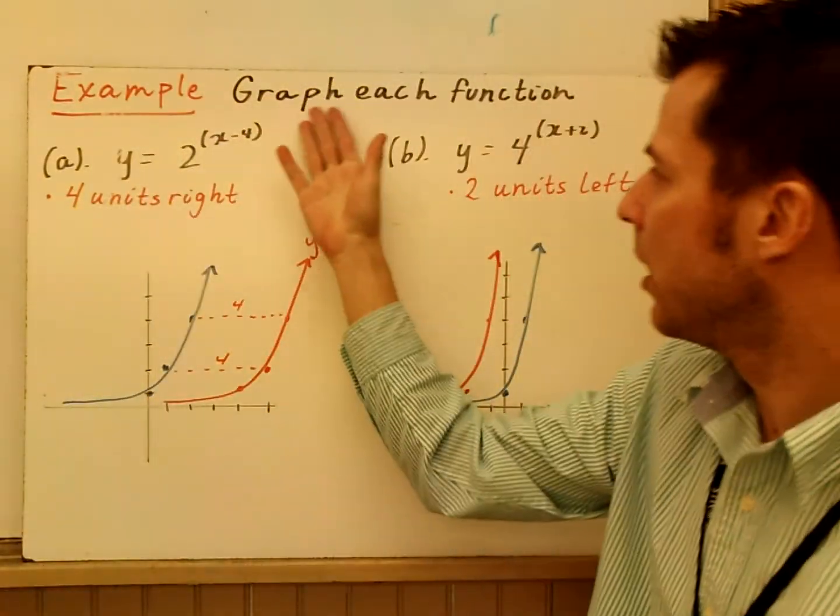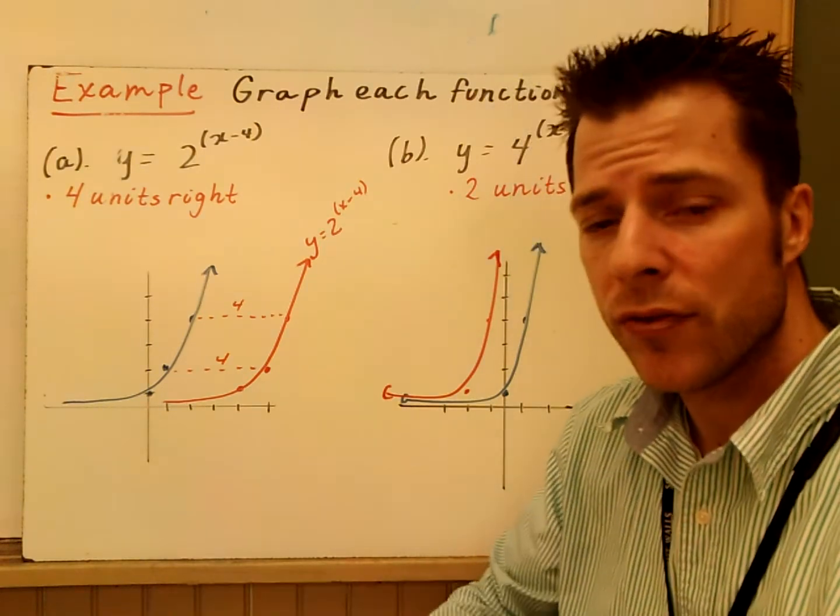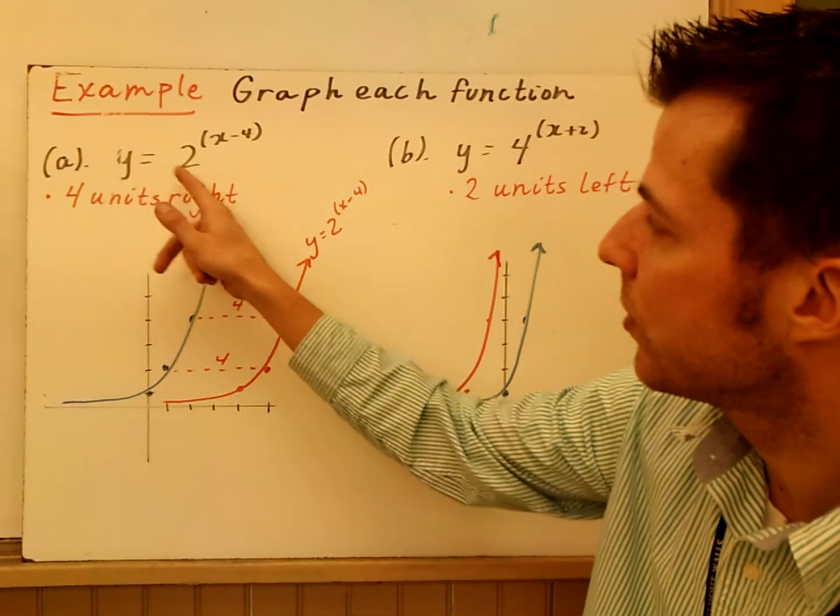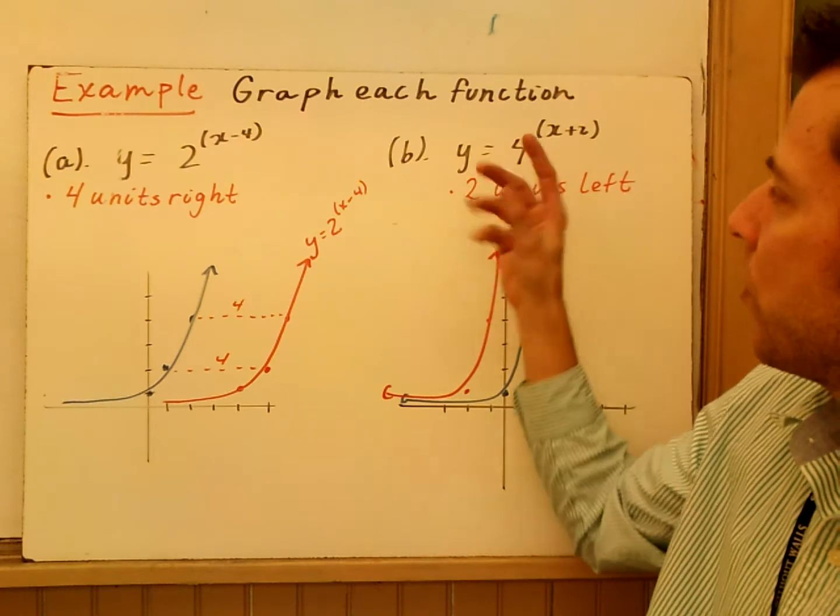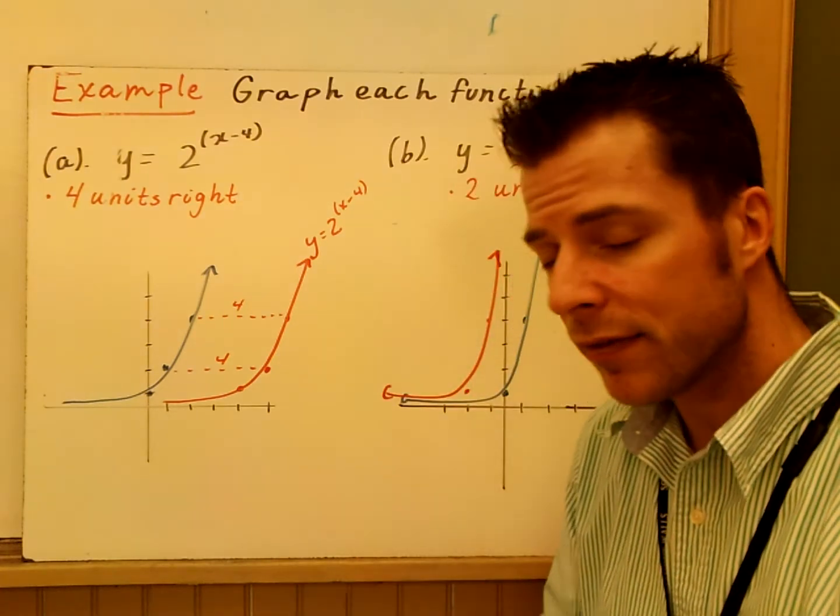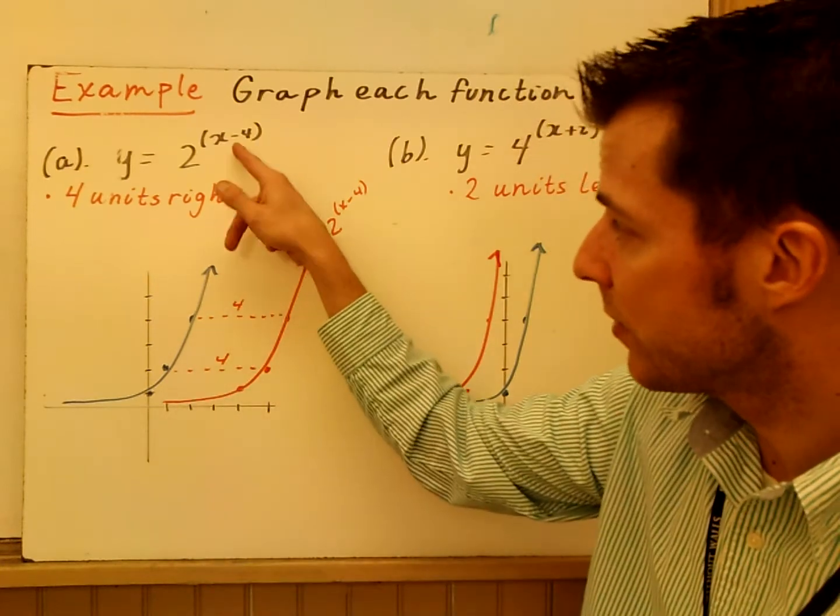Here I've shown another example, graph each of these functions, and their translations were moving left and right. Y equals 2 to the X minus 4, and B, Y equals 4 to the X plus 2. The first thing you want to do is identify what is going on here, what is my graph supposed to do. Now, X minus 4, you see that subtraction sign, you're taking away 4.